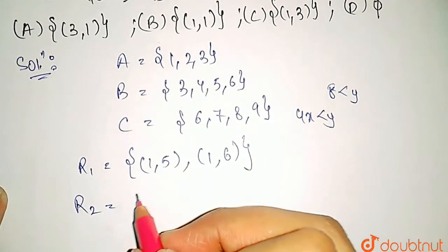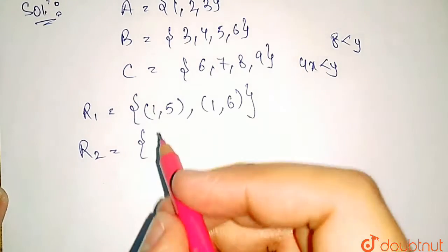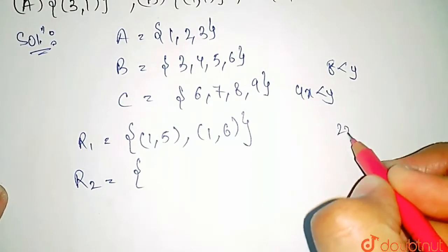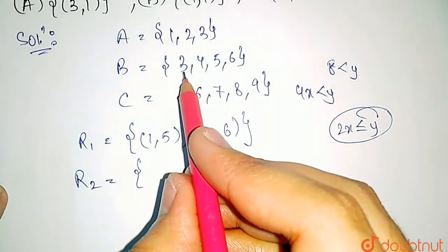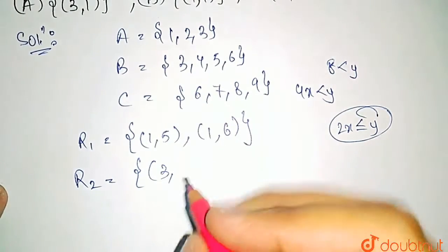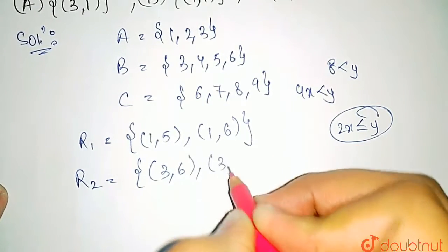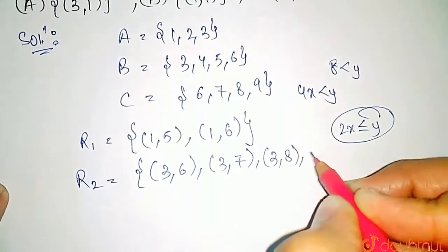Similarly, if we write R2, R2 was defined as 2x ≤ y from B to C. So for R2, 2x should be less than equal to y. So if we take x as 3, then the y would be 6 and 7 because 7 is also greater than 6, and 8, also 9.